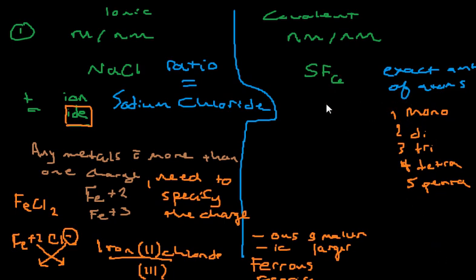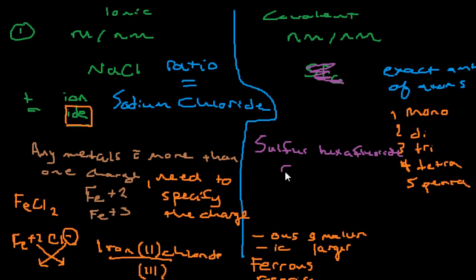These are just prefixes. In the case of SF6, we have sulfur, and since six is hexa and fluorine forms an anion so it gets '-ide,' it becomes sulfur hexafluoride. Naming covalent compounds is really very simple. Hopefully that clears up the questions about naming ionic and covalent compounds.